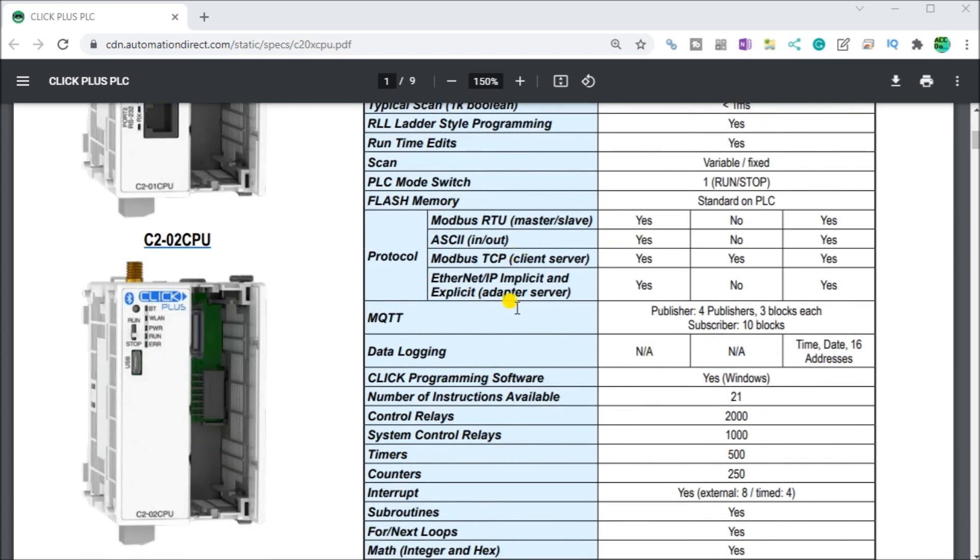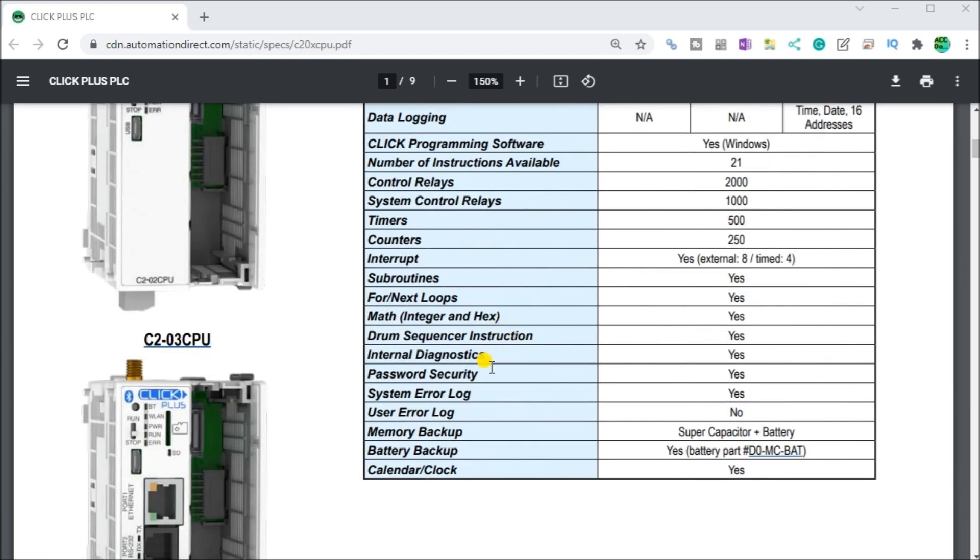Then we look down further, we have logging and at the bottom here you see the memory backup. We have a super capacitor plus battery. Looking at the specs, the super capacitor will hold this memory for one hour. After one hour we'll lose it, but since we have a battery or we install a battery into our controller, then we're able to keep that on for three years.